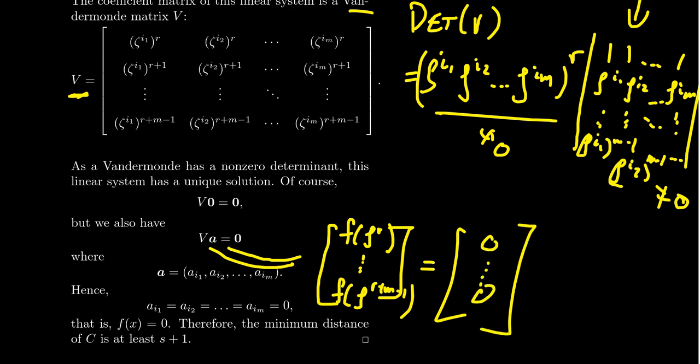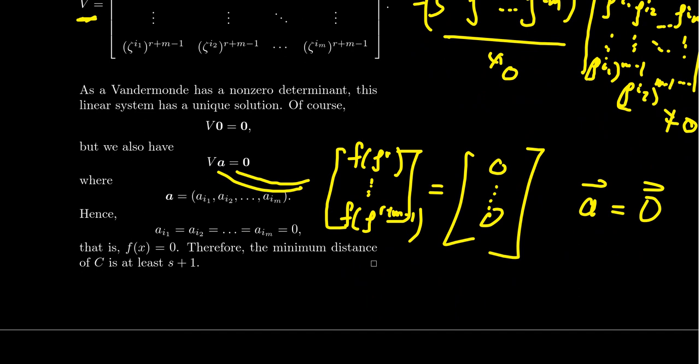Since V is non-singular, there is only one solution, so the vector A must equal the zero vector. That means all coefficients A_{i1}, A_{i2}, …, A_{iM} equal zero, which tells us that F was the zero polynomial. Therefore, if we have a polynomial in the cyclic code whose weight is less than or equal to S, it must be the zero polynomial. This means every non-zero polynomial in the cyclic code has weight at least S + 1. Since in a linear code the minimum distance equals the minimum weight of a non-zero codeword, the minimum distance is at least S + 1. Any cyclic code with this property is guaranteed a minimum distance of at least S + 1 — a very nice result.